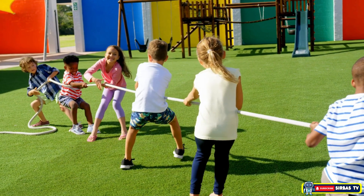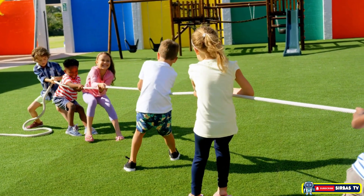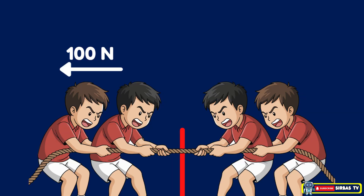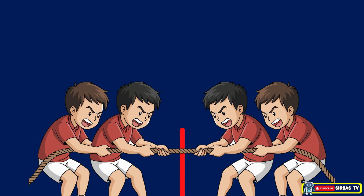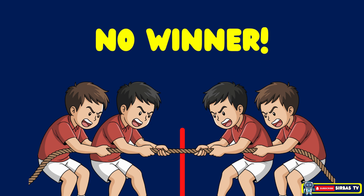Now picture two teams playing tug of war. Team A pulls the rope to the left with a force of 100 Newtons, and Team B pulls to the right with the same 100 Newtons. Since both teams are pulling with equal force but in opposite directions, the net force is zero. That means the rope won't move at all — it just stays right in the middle. No one wins here, because both sides are equally strong.